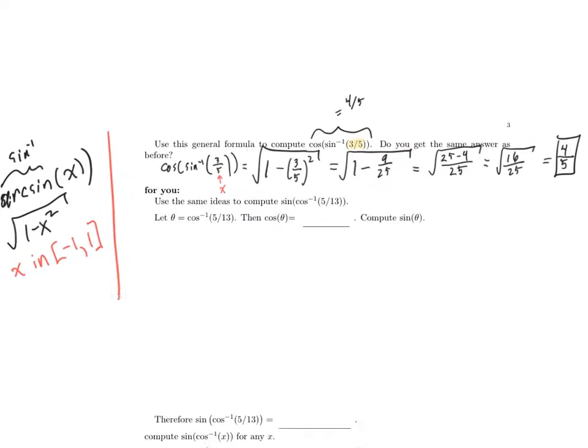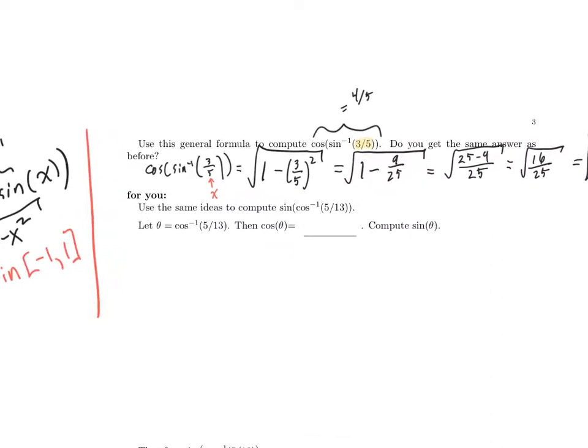Let's try to do the same thing, but let's try to do the opposite. Let's try to compute the sine of the inverse cosine of x. And let's start with a single example, 5 thirteenths. So, you'll notice here that I say for you. Before you go any farther in this video, I want you to make that computation.